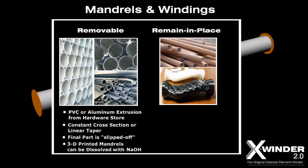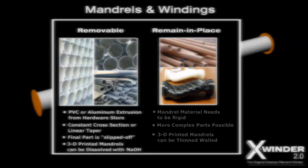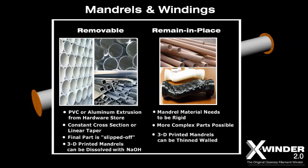Soluble 3D printed mandrels can be more complex in shape and removed by dissolving in a chemical solution such as sodium hydroxide — look for a future video on this topic. Remain-in-place mandrels need to be built from a rigid material and, since removal is not required, these parts can be more complex in shape. Thin wall 3D printed parts can be used as mandrels. If the final part is heat gun cured or cured in an autoclave under heat and pressure, the mandrel material should stand up to these rigors.